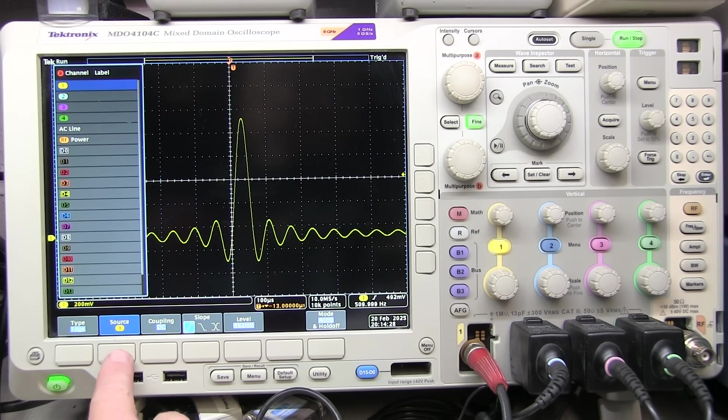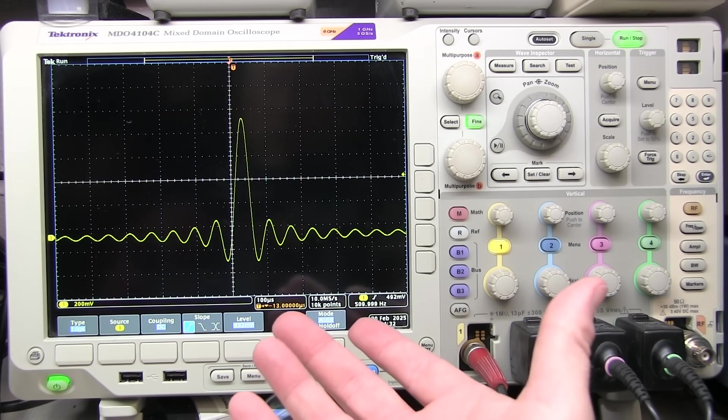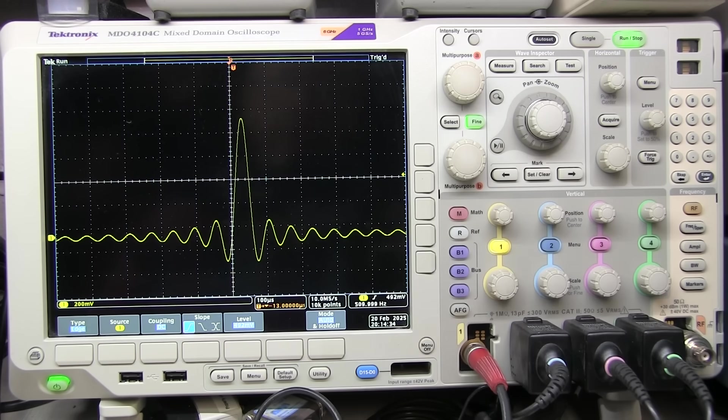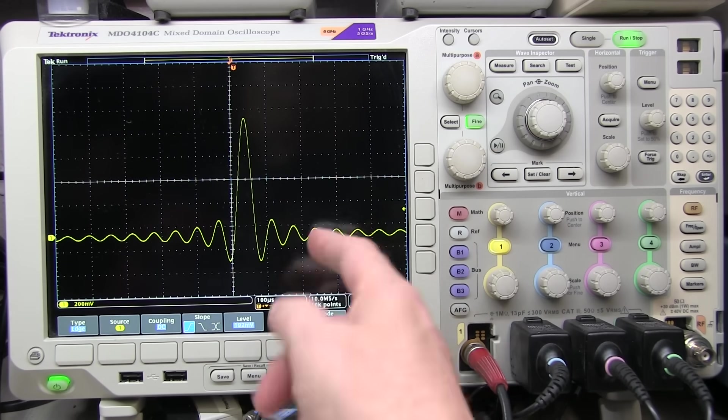Other controls, such as the source and trigger coupling and slope and level, these are all common to what you would have on an edge trigger on an analog scope as well.